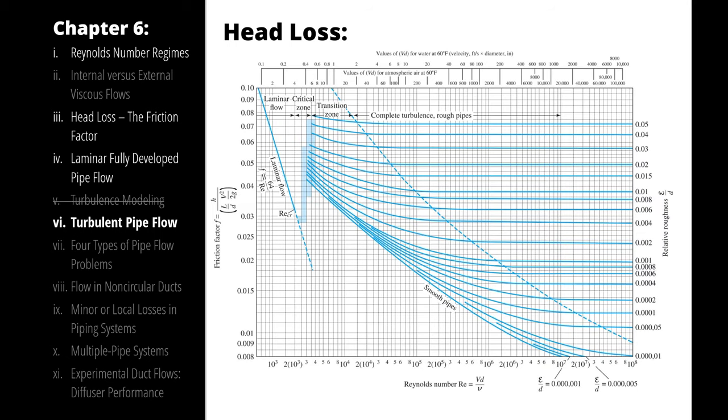The Moody chart relates friction factor to Reynolds number for a variety of relative roughnesses. Relative roughness is a dimensionless proportion, and it represents the average bump height along the walls divided by diameter.